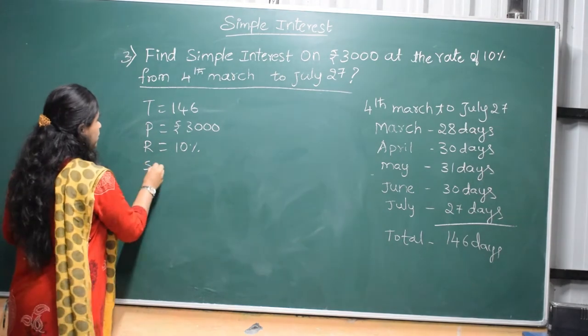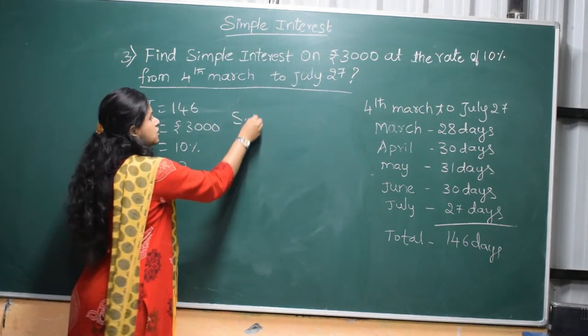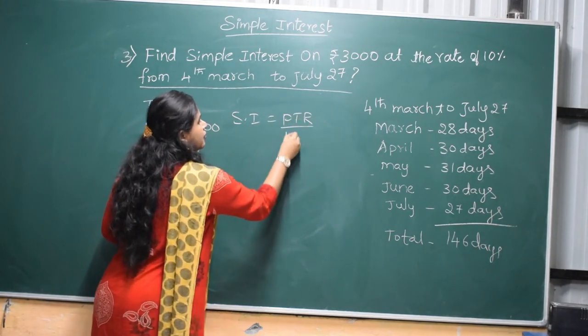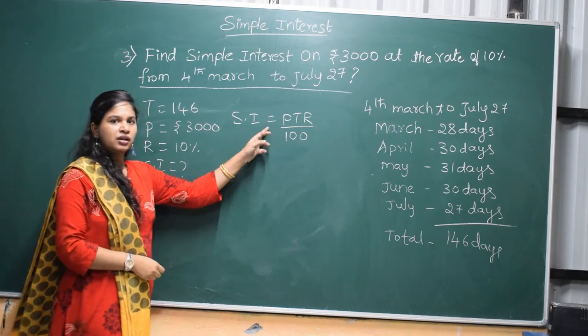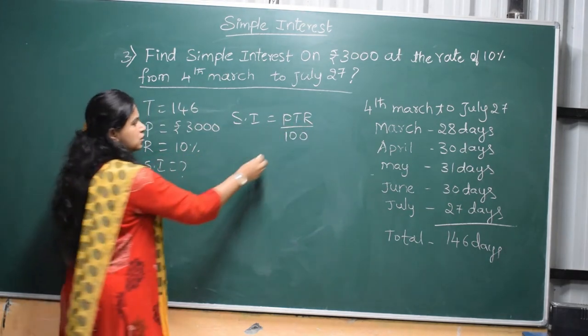Now, we have to calculate the Simple Interest. The Simple Interest formula, you know that, Simple Interest is equal to PTR by 100. P means principle, T means time, R means rate, divided by 100.